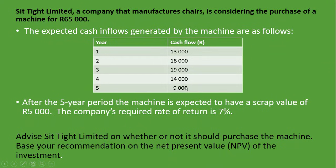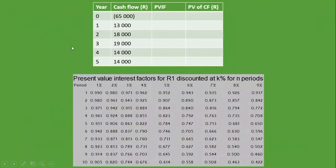For year 5, the cash flow is 9,000 rand. But we are also told the machine has a scrap value of 5,000 rand after the 5-year period. That scrap value is included in the year 5 cash flows. So we have 9,000 rand plus 5,000 rand, giving us 14,000 rand. If there were no scrap value, we would just use 9,000 rand.